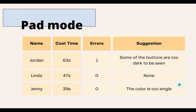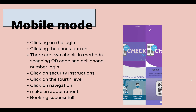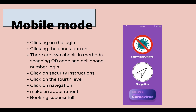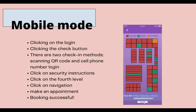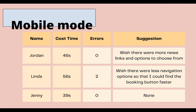Then, coming to the user test. Regarding the pad mode, the three user testers made the following comments: they wished there were more links and options to choose from, and that the colors are too limited. Regarding the mobile mode user test, suggestions included wishing there were fewer navigation options so that they could find the booking button faster, and that some of the buttons are too dark to see.